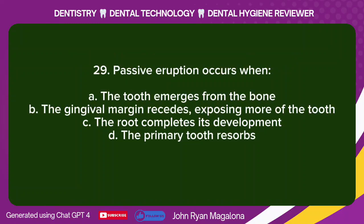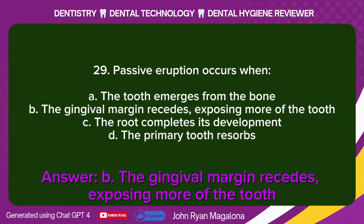Question 29: Passive eruption occurs when: A. The tooth emerges from the bone. B. The gingival margin recedes, exposing more of the tooth. C. The root completes its development. D. The primary tooth resorbs. Answer: B. The gingival margin recedes, exposing more of the tooth.